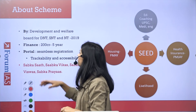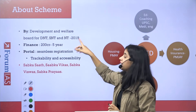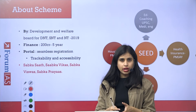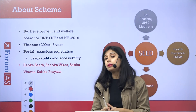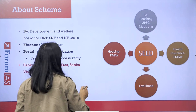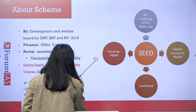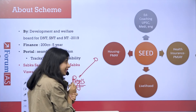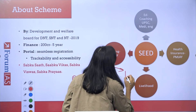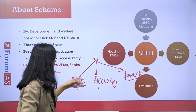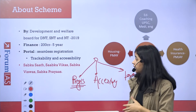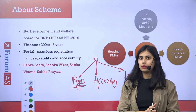This scheme will be implemented by the Development and Welfare Board for DNT, SNT, and NT, which was established in 2019 on the recommendation of the Idate Commission. A budget of 200 crore rupees is allocated for the next five years. To implement this scheme successfully, a portal is being established with three main functions: seamless registration for tribals, easy access to information, and tracking the progress of their applications — ensuring accountability and transparency.